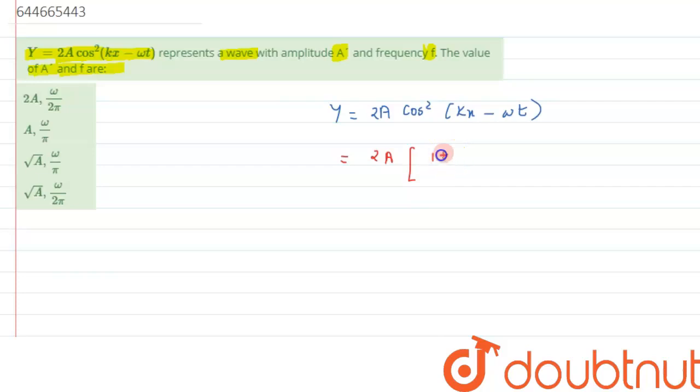1 plus cos 2 theta, that is cos 2 kx minus omega t the whole divided by 2. From where we have got this result, from the formula cos 2 theta is equal to 2 cos square theta plus 1.